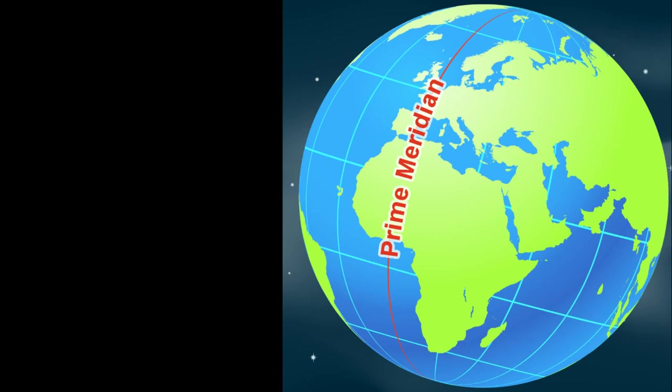Second, this line is totally, completely, 100 million percent made up. Unlike all of those horizontal lines we talked about, which are all based on the Earth's rotation or its tilt towards the sun, the prime meridian could have gone anywhere. Why did it end up where it is?